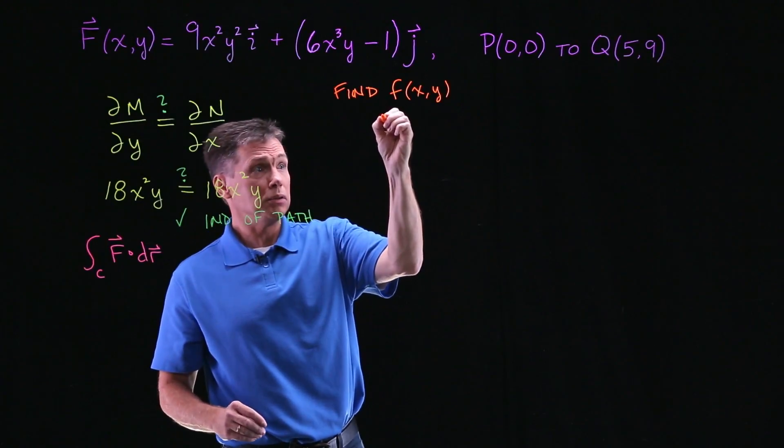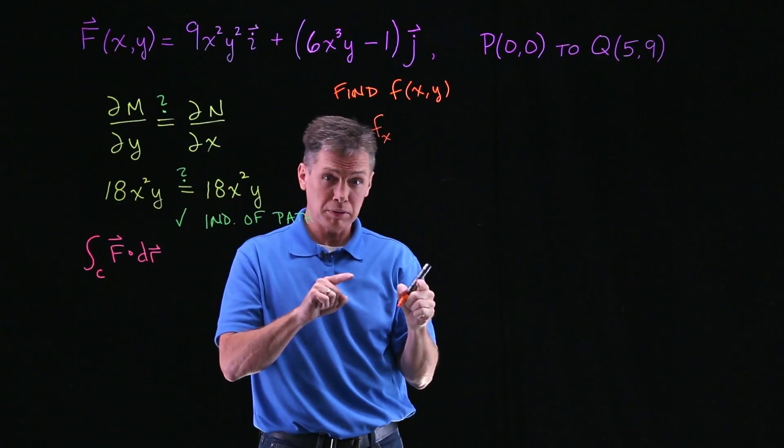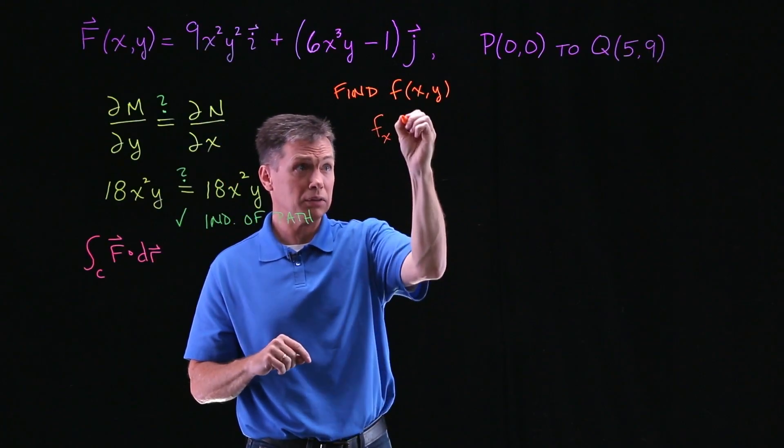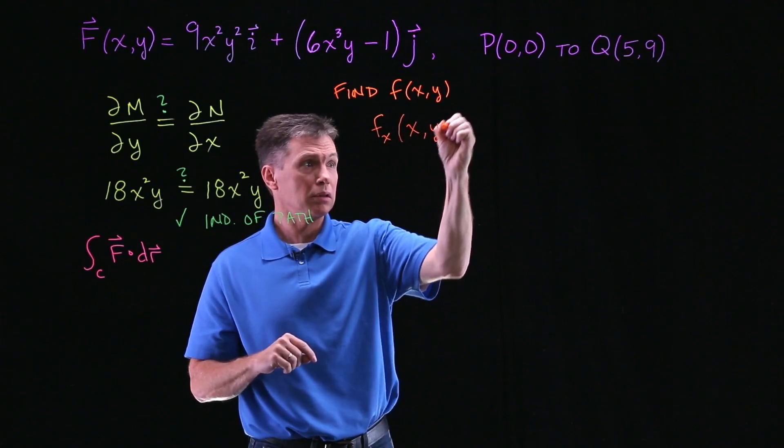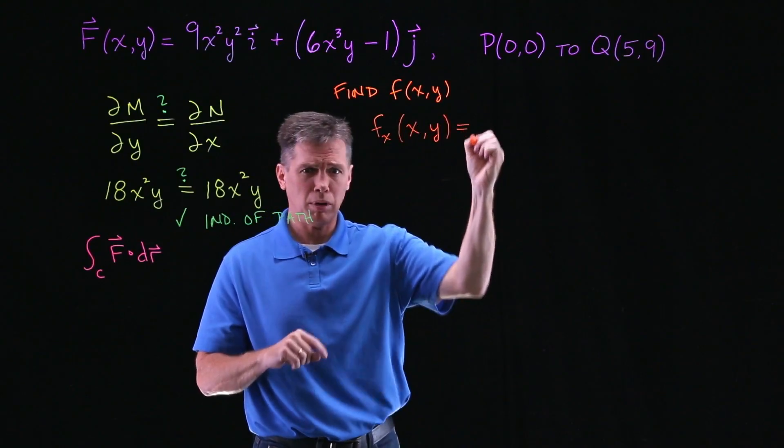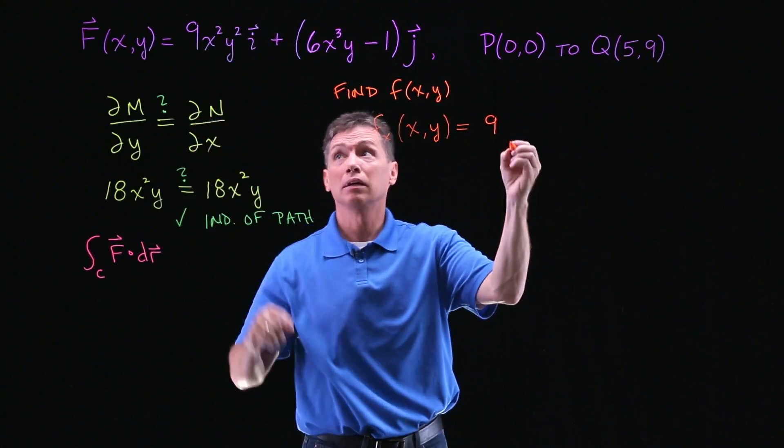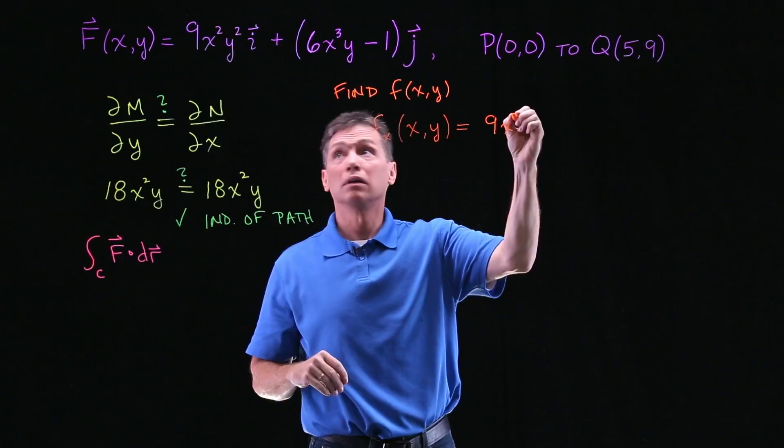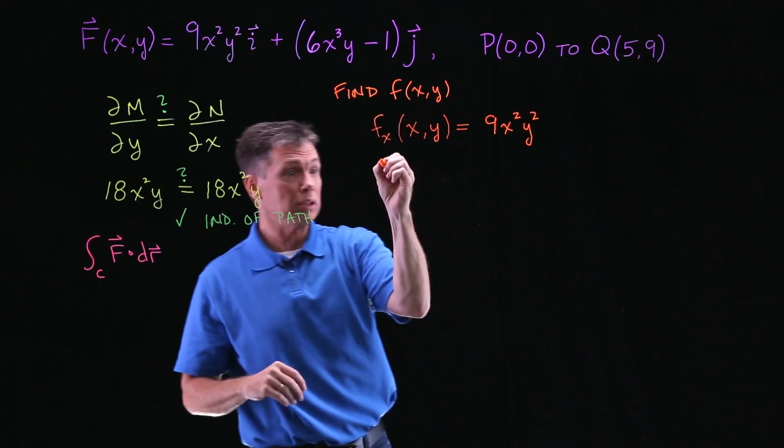So let's do some work to find that lowercase f of XY. To do that, what we would typically do is realize that the partial derivative of f with respect to X has to end up equaling the M part of our force field function, so 9X²Y².